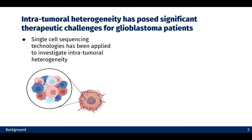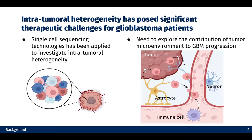With the development of single-cell technologies, we are able to probe these differences. However, we also need to remember that in the native tissue context, tumor cells are not existing in isolation. They are frequently interacting with the normal tumor microenvironment, such as neurons, astrocytes, and immune cell populations.